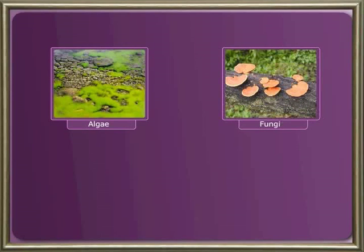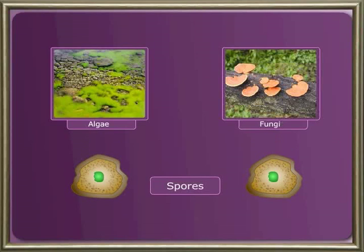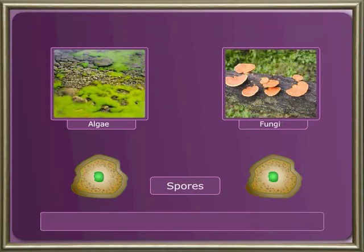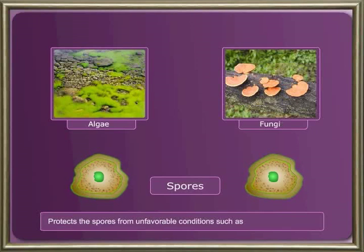Reproduction in these non-flowering plants is carried on through spores. When conditions are not favourable, algae and fungi produce structures called spores. Spores are very small and microscopic structures. Each spore is covered by a thick protective coat, which protects the spore from unfavourable conditions such as extreme heat or cold. When conditions are favourable, the spore develops into a new plant.